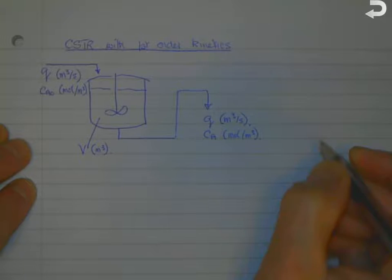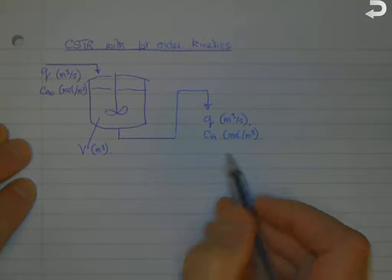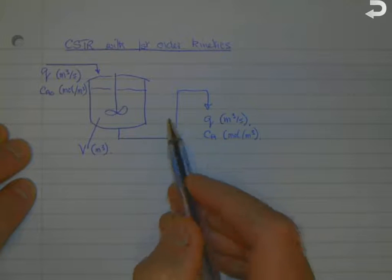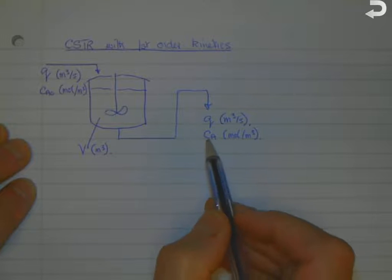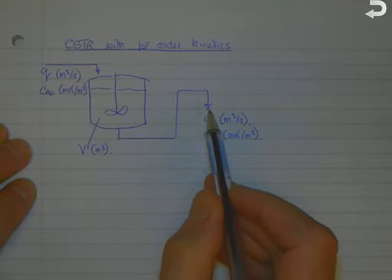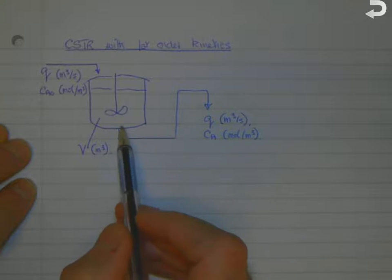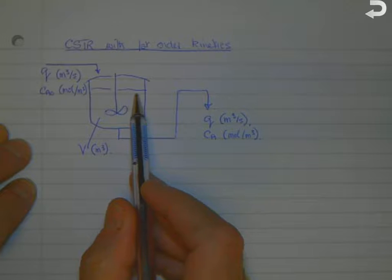The outlet has a concentration CA of our starting material A in moles per cubic meter. Because the assumption is that this is well mixed, the concentration CA in the outlet is the same as the concentration at any point in the reactor.